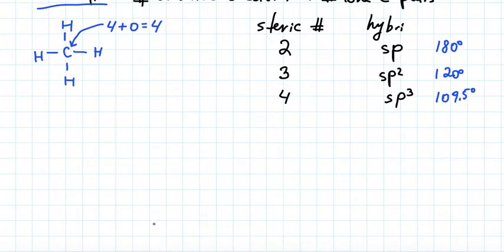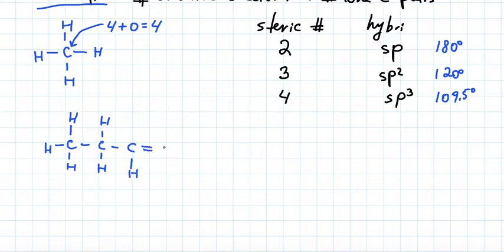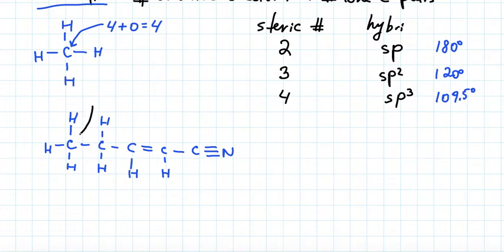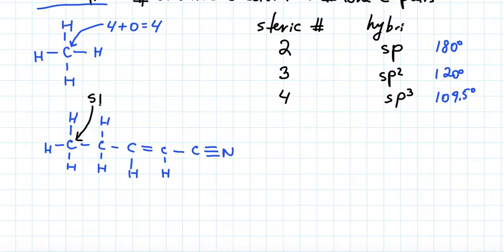Let's practice with a molecule: a carbon connected to three hydrogens, connected to another carbon with two hydrogens, connected to another carbon with one hydrogen and a double bond to a carbon with one hydrogen, connected to a carbon with a triple bond to a nitrogen. Let's determine hybridization of all carbons. The leftmost carbon is attached to three hydrogens and one carbon — four attachments, no lone pairs — so its steric number is four and its hybridization is sp3.